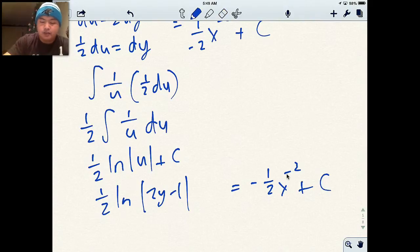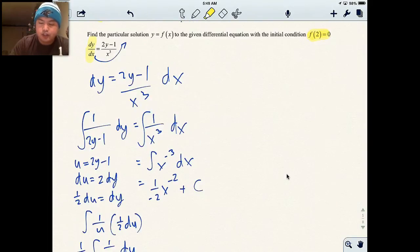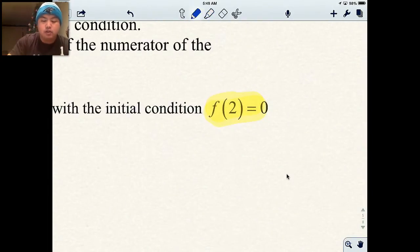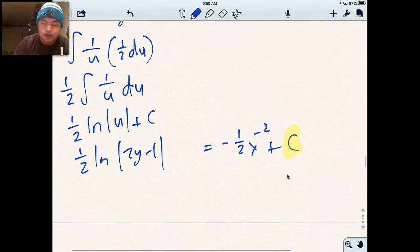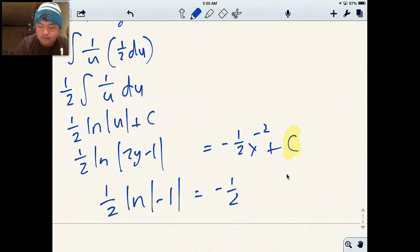So this is technically my answer. But the problem is that I have a c. And what we did in these problems is solve for c. So if you look at my original initial condition, it says f of 2 equals 0. This means like x and this means y. So my initial condition, it says make x 2 and make y 0. So I go back to my equation. Make x 2 and make y 0. This becomes half ln of absolute value of negative 1. If this one becomes 2, I get negative half, 1 over 4 plus c.